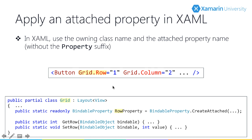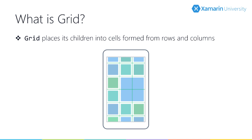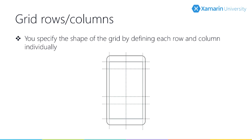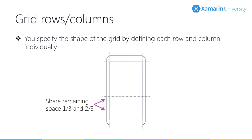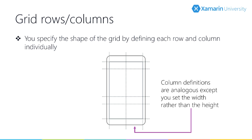A grid is made up of rows and columns, and you put children into the cells formed by those rows and columns. A child can occupy a single cell, or span across multiple columns, multiple rows, or both. You have three options for sizing each row or column: a fixed value (absolute), automatically adapt to content (auto — the row is as tall as its tallest child), or proportional sizing using star.